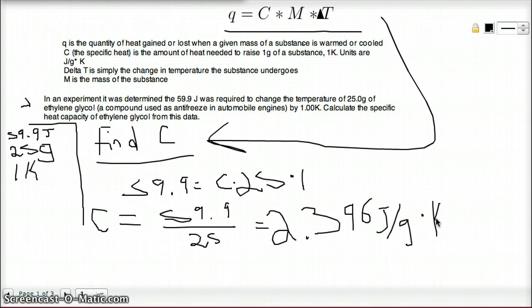So that would be the specific heat of ethylene glycol, 2.396 joules per gram kelvin. The amount of energy needed to raise 1 gram, 1 kelvin, or 1 degree Celsius. So let's go to our next example.